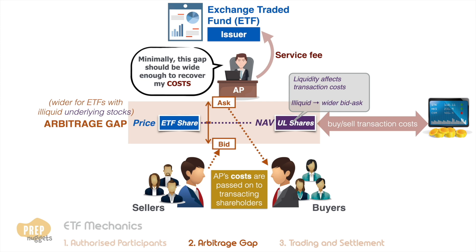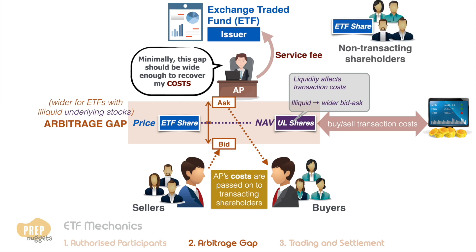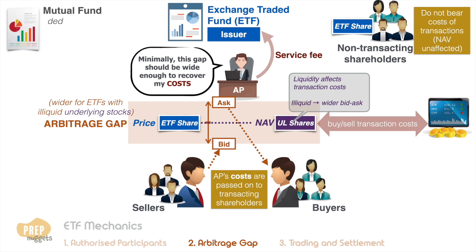The NAV of the ETF is not affected by the transaction costs. This arrangement is fairer to non-transacting shareholders, as the value of their holdings is not impacted by transaction costs. Shareholders who trade frequently incur more costs, while those who buy and hold incur less. In contrast, mutual funds deduct transaction costs from the NAV, so all shareholders bear this cost regardless of how frequently they trade.